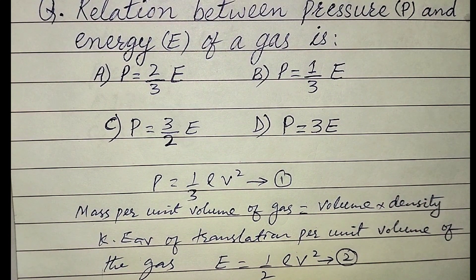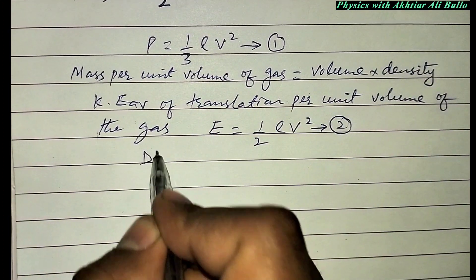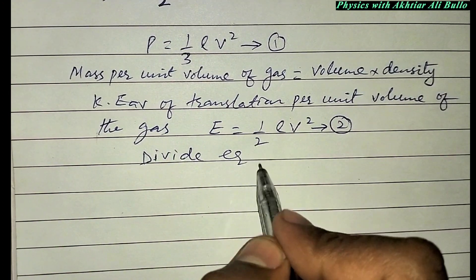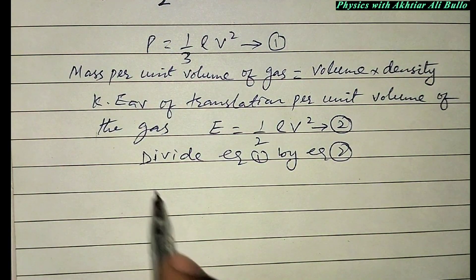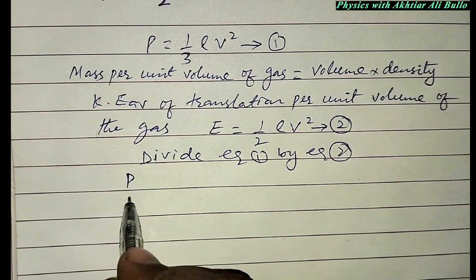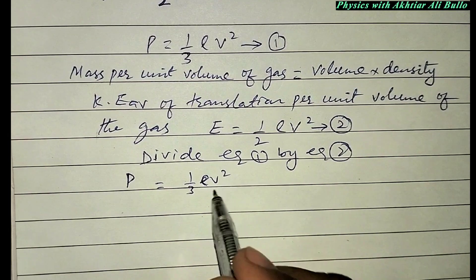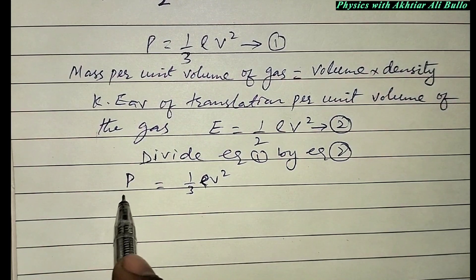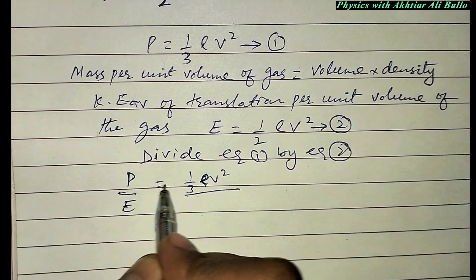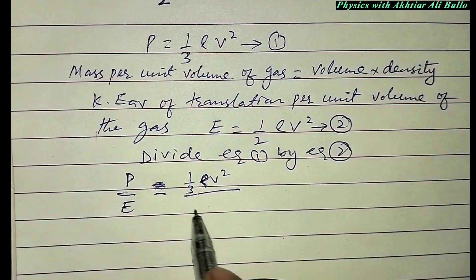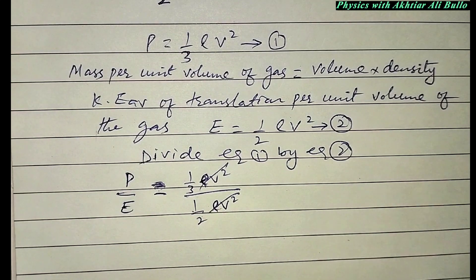For further simplification, divide equation 1 by equation 2. Equation 1 is P = (1/3)ρv², equation 2 is E = (1/2)ρv². So P/E equals (1/3)ρv² divided by (1/2)ρv². The ρv² terms cancel out.